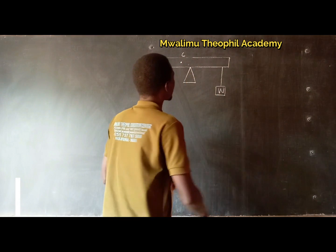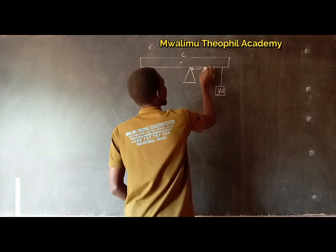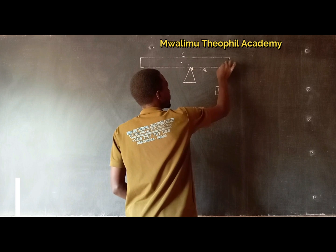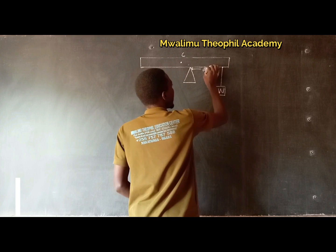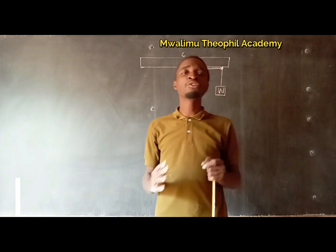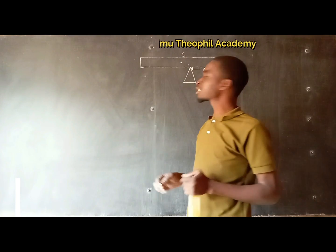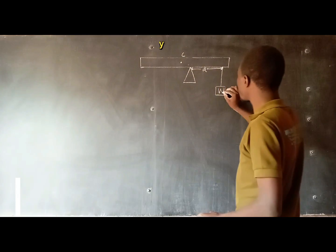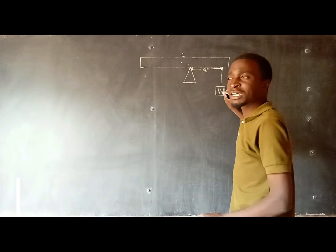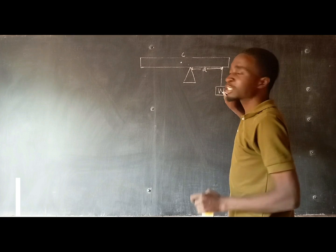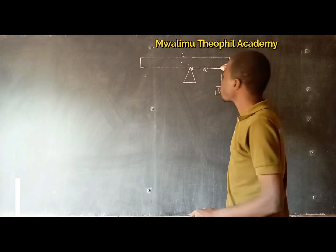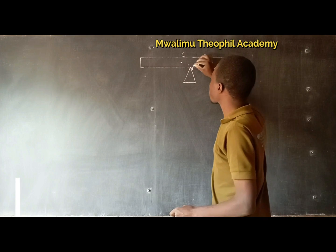Now, if this ruler is in equilibrium, this is the distance D1 — a distance from the turning point to where the weight is acting. According to the definition of moment of a force, it is the product of force. Our force is W, and it is multiplied by the perpendicular distance from the point — the turning point — to the line of action of the force.